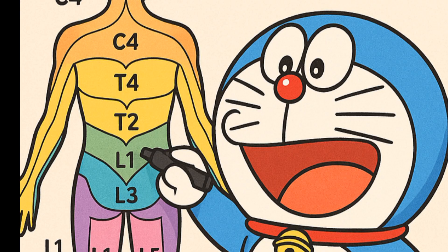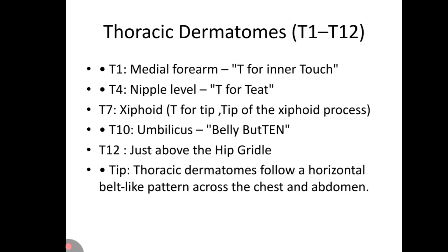Next we move to the thoracic dermatomes T1 to T12. T1 is the medial forearm. T4 is the nipple area — T4 tip. T7 is the xiphoid process — T for tip, tip of the xiphoid process. T10 is the umbilicus area, that is the belly button.